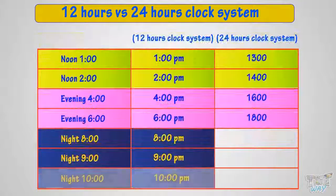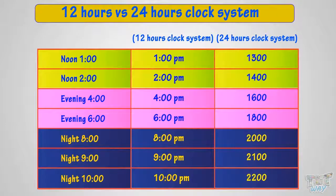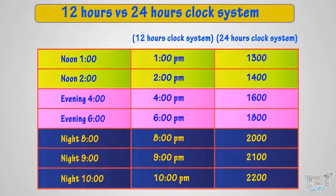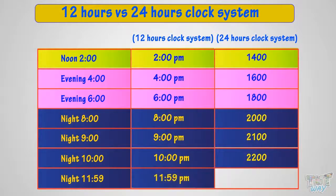8 in the evening is called 8 p.m. in the 12-hour clock system and 2000 hours in the 24-hour clock system. 9 in the evening is called 9 p.m. in the 12-hour clock and 2100 hours in the 24-hour clock system. 10 in the night is called 10 p.m. in the 12-hour clock system and 2200 hours in the 24-hour clock system. 11:59 in the night is called 11:59 p.m. in the 12-hour clock.